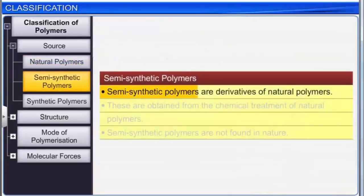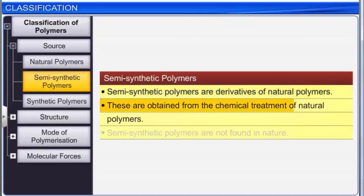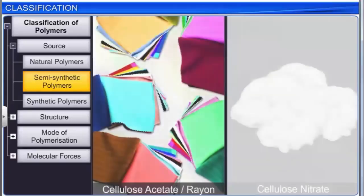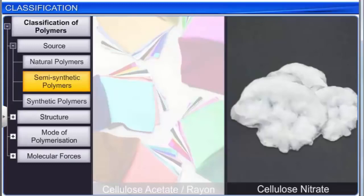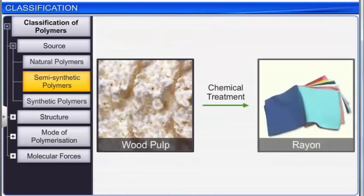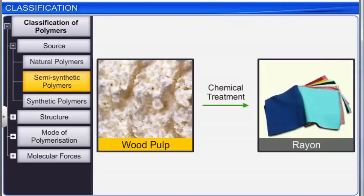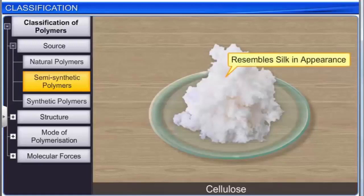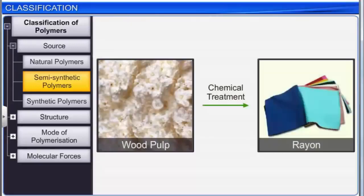Semi-synthetic polymers are derivatives of natural polymers, obtained from the chemical treatment of natural polymers. They are not found in nature. Examples are cellulose acetate, rayon, and cellulose nitrate, which is highly inflammable. Rayon, obtained by the chemical treatment of wood pulp which contains the natural polymer cellulose, resembles silk in appearance. Hence, it is also referred to as artificial silk.